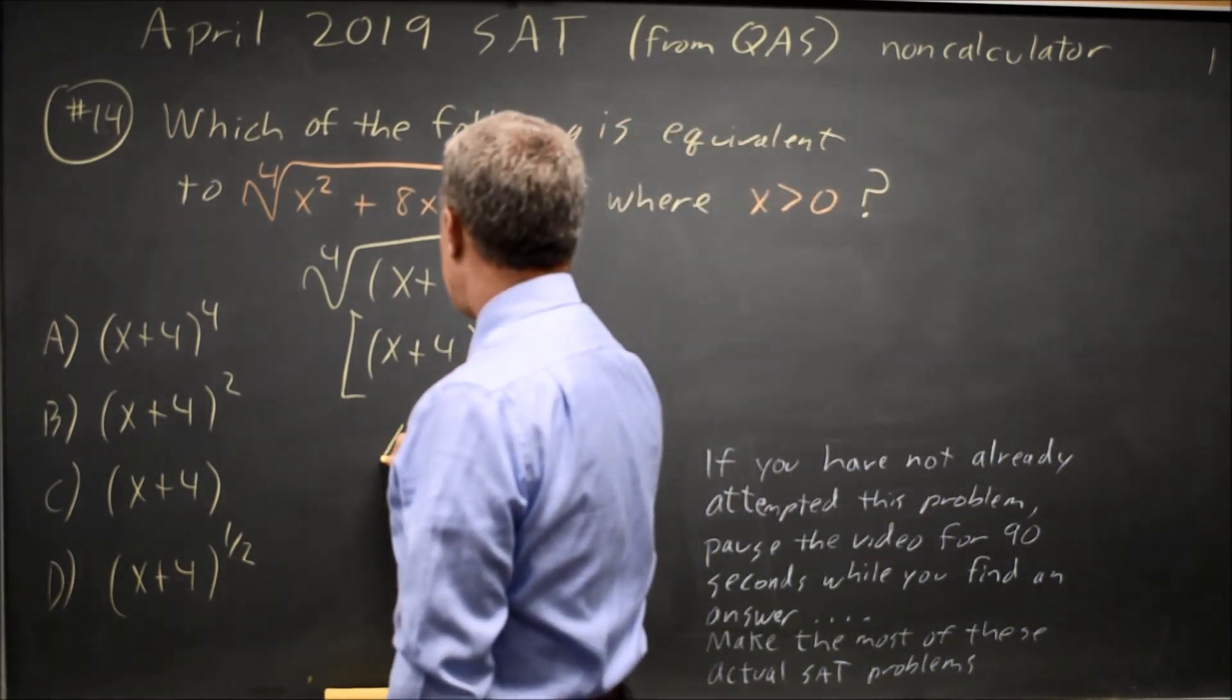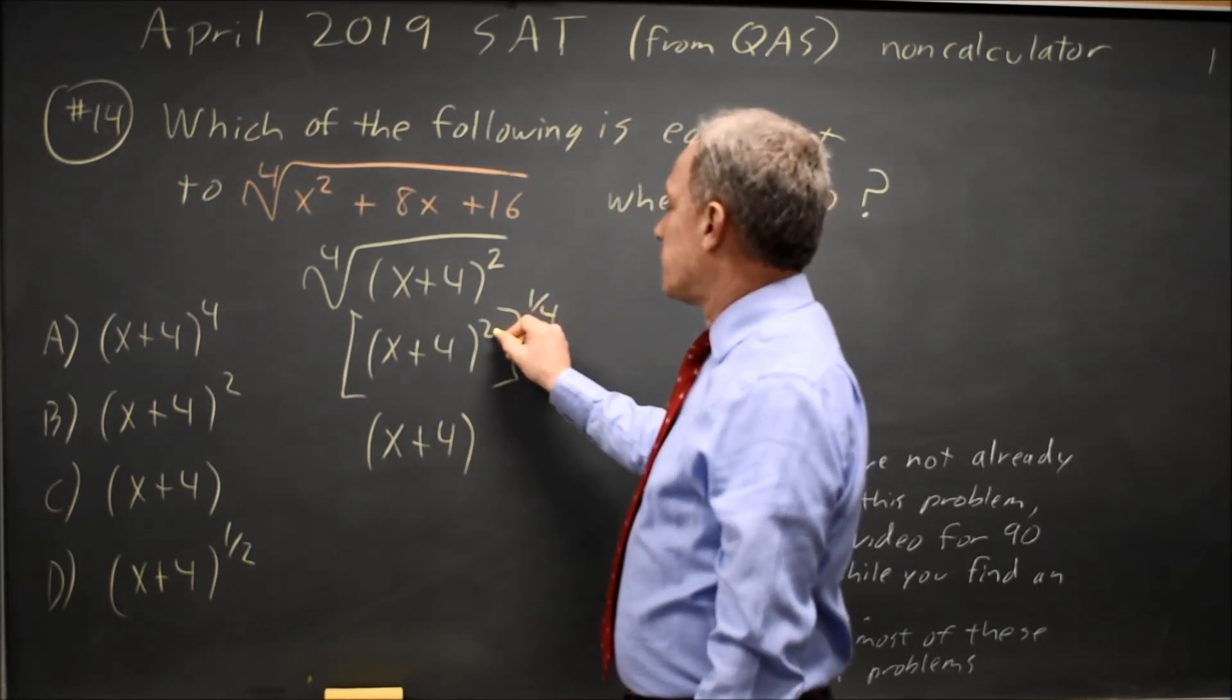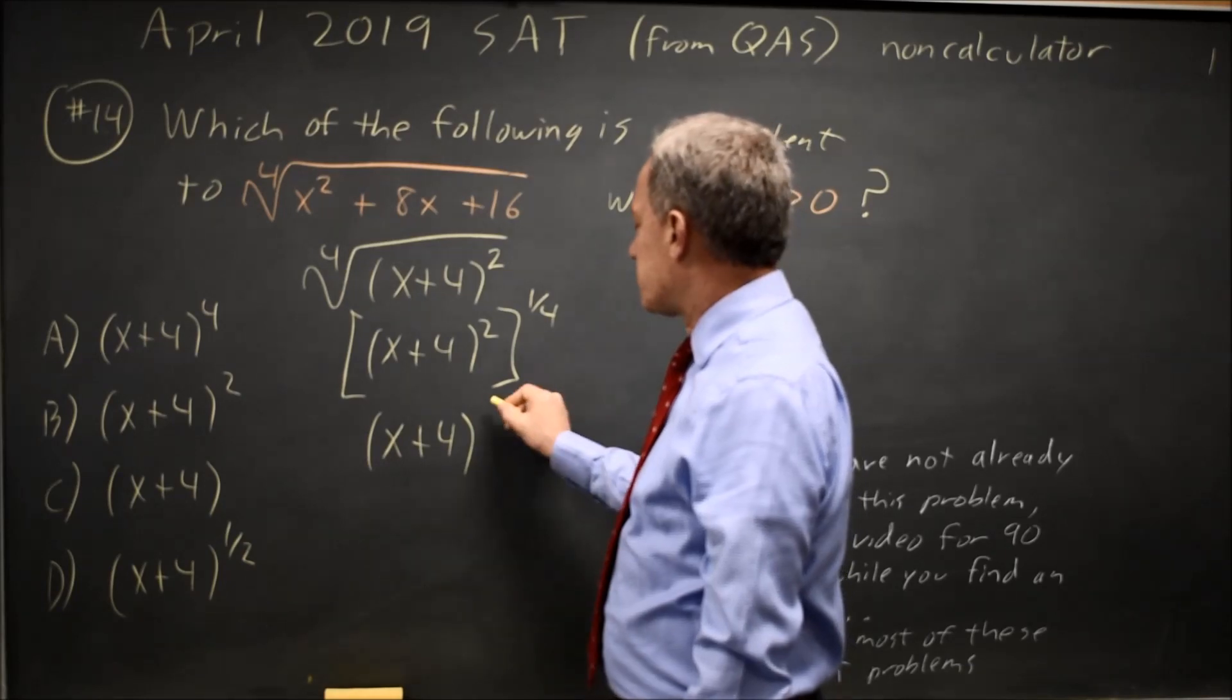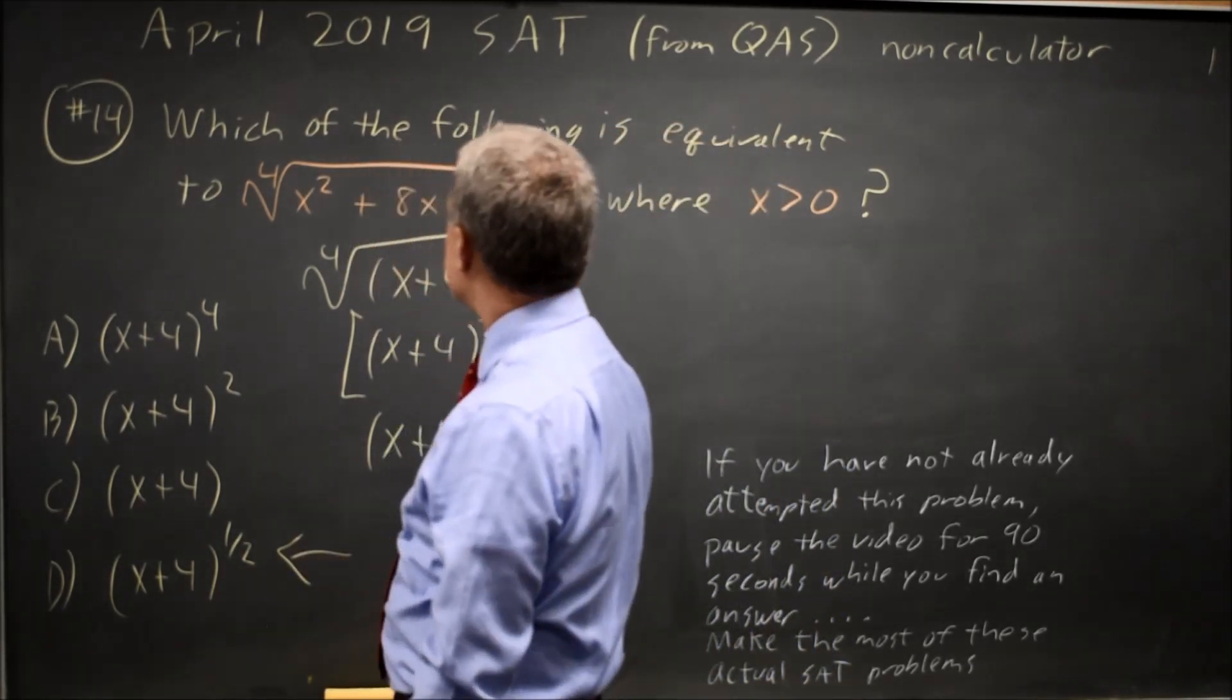If you have a power of another power, you multiply the exponents. So this is an expression squared to one-fourth, that would be to the two-fourths power, which is the one-half power, so choice D would be the correct answer.